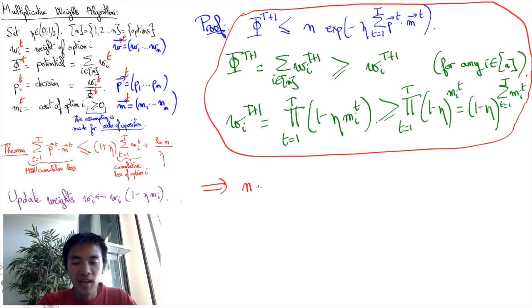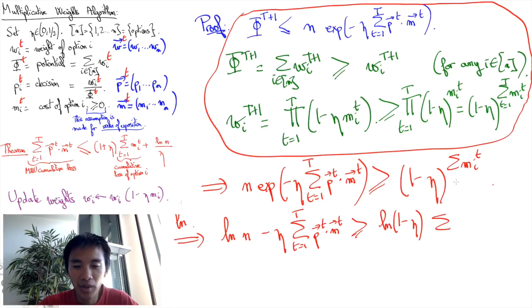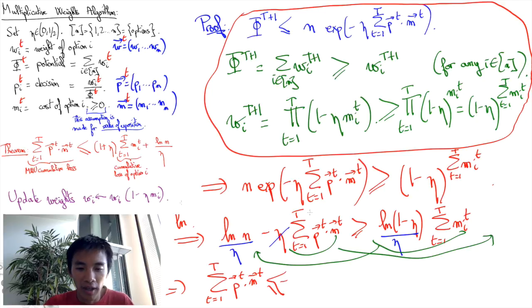Now, if we combine it all, we obtain that n times the exponential of minus eta times the cumulative losses is greater or equal to the potential function at round t+1, which is greater or equal to 1 minus eta to the power of the cumulative losses. We are almost there. We can now take the logarithms of both sides, yielding log of n minus eta times the cumulative losses is greater or equal to log of 1 minus eta times the cumulative losses of option i. We then do a little bit of algebra, and this yields the cumulative losses is at most minus 1 over eta times the logarithm of 1 minus eta times the cumulative losses of option i plus log of n divided by eta.